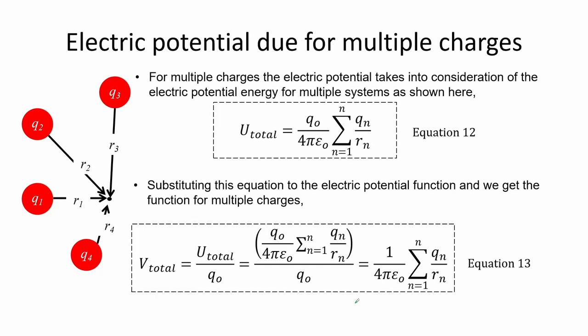For multiple charges, the electric potential takes into consideration the electric potential energy for the individual charges, and we use equation 12. Substituting equation 12 into the general equation for electric potential, we get the function that describes electric potential for multiple charges, shown in equation 13.